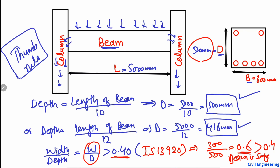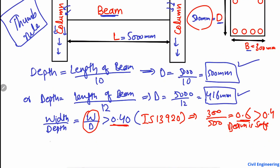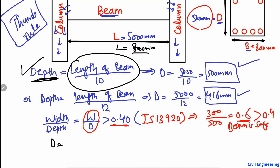Now let's take another example where we change the length of the beam. Suppose the new length of the beam is 8000 millimeters. Using the formula depth equals length divided by 10: 8000 divided by 10 gives us 800 millimeters. So we can start our design with a depth of 800 millimeters.